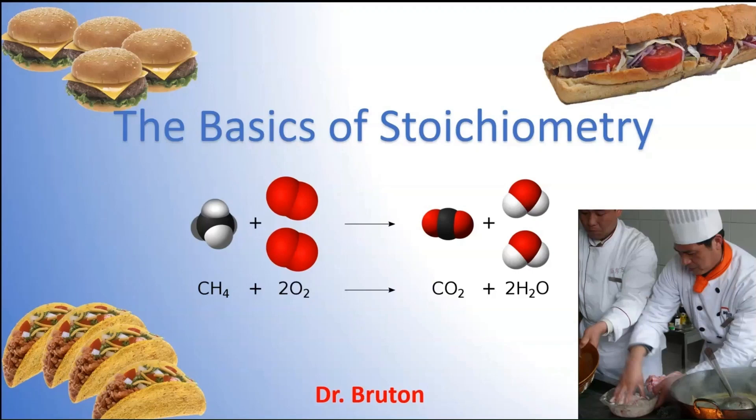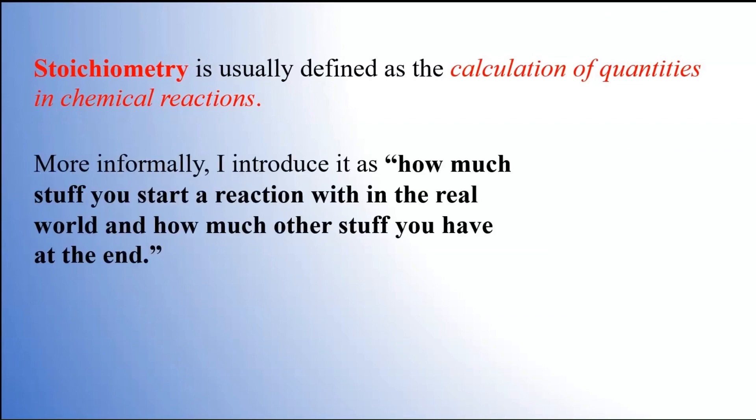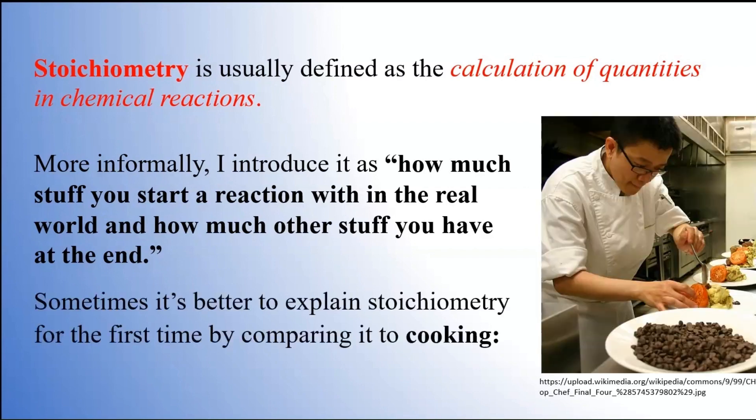Welcome to the basics of stoichiometry. In order to talk about the topic, we need to start off with a pretty decent definition of what it is. The way it's usually defined is the calculation of quantities in chemical reactions, but I always find that pretty vague, so I'll introduce it as how much stuff you start out a reaction with in the real world, and how much other stuff you have at the end. I usually start this out by using a cooking analogy, which works pretty well.